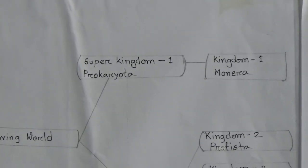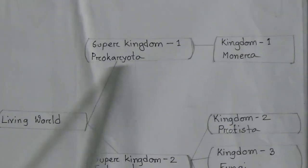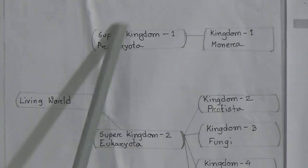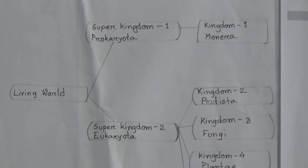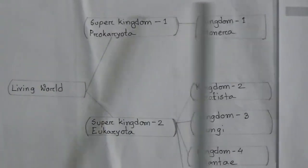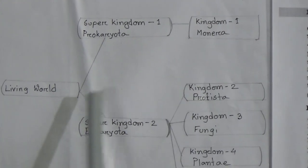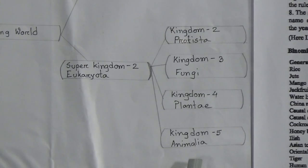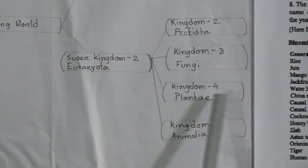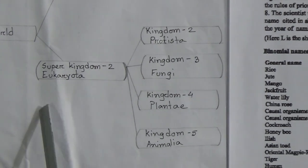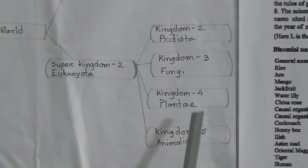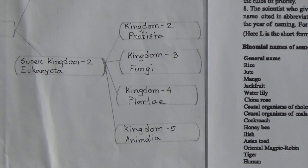According to Whittaker's theory, the living world is classified into two super kingdoms. Super Kingdom 1 is Prokaryota — cells that are very ancient and not properly organized. Super Kingdom 2 is Eukaryota — cells that are properly organized. In Prokaryota, there is only one kingdom: Monera. In Eukaryota, there are four kingdoms: Kingdom 2 Protista, Kingdom 3 Fungi, Kingdom 4 Plantae, and Kingdom 5 Animalia.